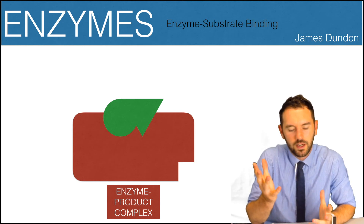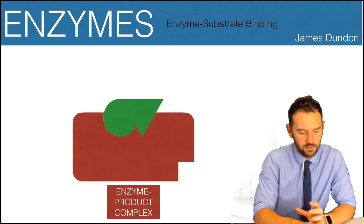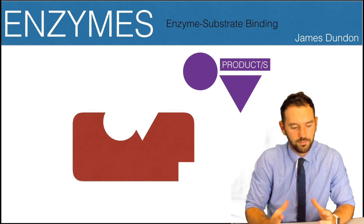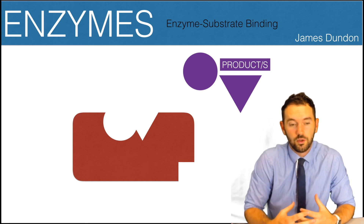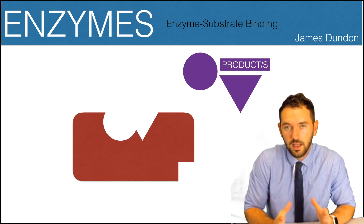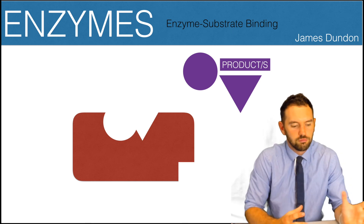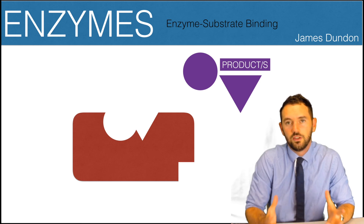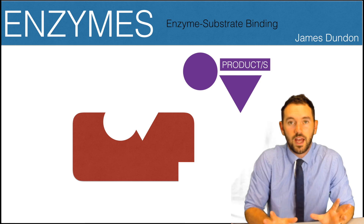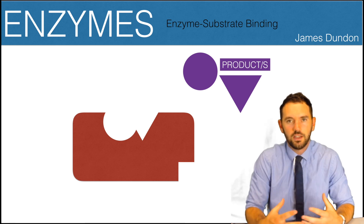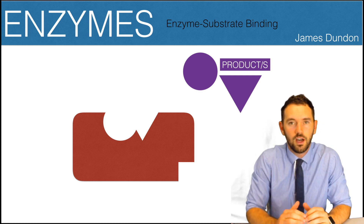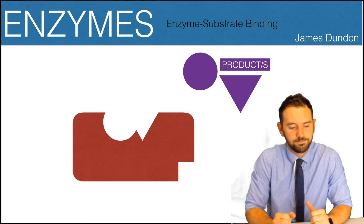Once the reaction takes place, the enzyme-product complex releases two products from the active site, and the active site reverts back to its normal state. The enzyme hasn't been changed in any way, but we now have two products. The rate at which this happens is much faster than the substrate breaking down by itself. In normal biological systems, that breakdown might never happen without enzymes - there is some steady-state energy from heat, but if it's not high enough, substrates won't break down without enzymatic help.